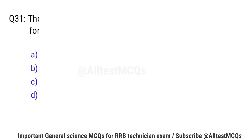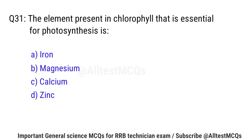Question No. 31: The element present in chlorophyll that is essential for photosynthesis is? Right option is B: Magnesium.